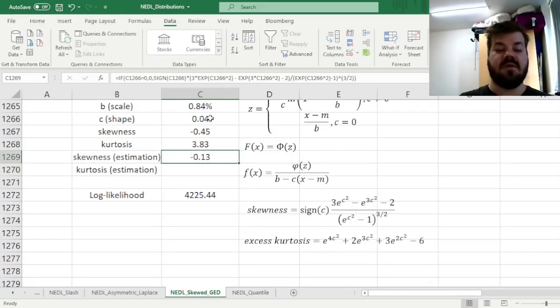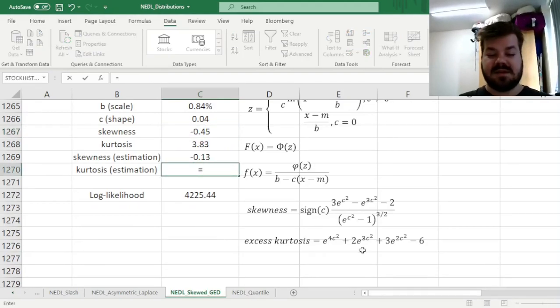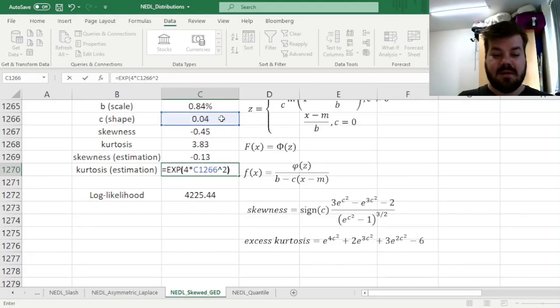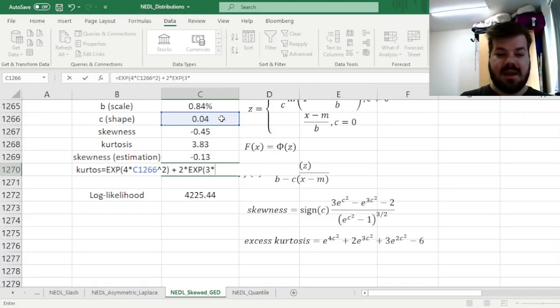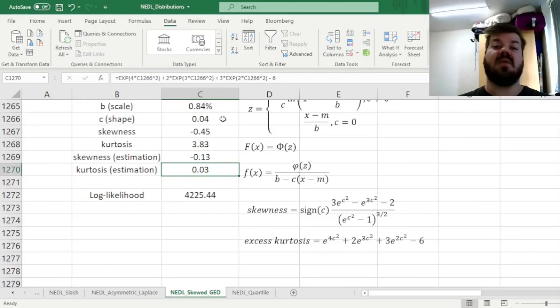And then we close the parentheses, enforce the formula, and get a theoretical skewness of minus 0.13, which is quite a bit lower in magnitude than the empirical skewness, but that's mostly what you get when estimating those types of functions using maximum likelihood. That is not something to be worried about, necessarily. And for kurtosis, we can use this function over here. So the exponent of 4 times C-squared, plus 2 times the exponent of 3, C-squared, plus 3 times the exponent of 2, C-squared, quite bulky, isn't it? And finally, minus 6. And we have a quite low value of theoretical kurtosis, which is at 0.03.